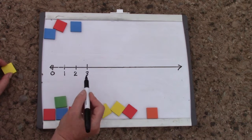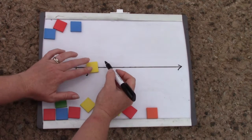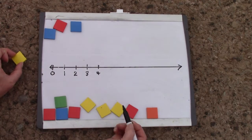So I have zero, one, two, three. And I am going to label my line all the way across with a little number line.